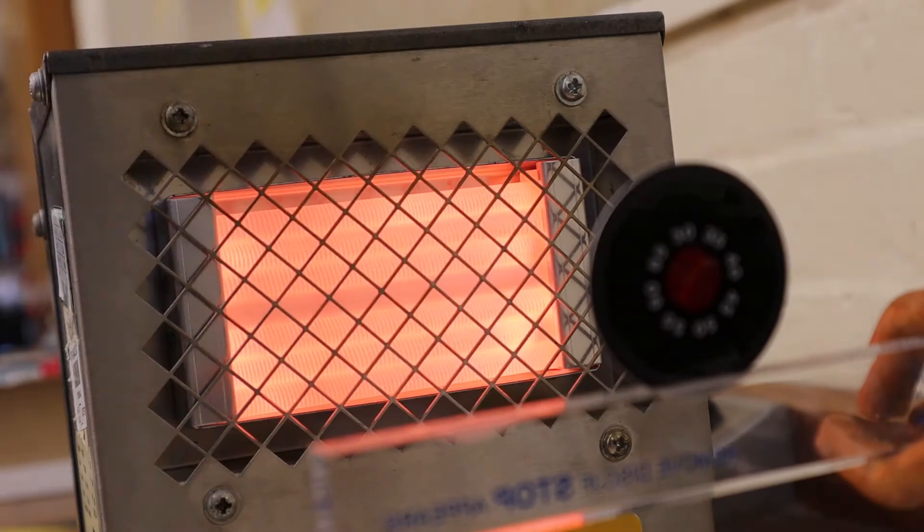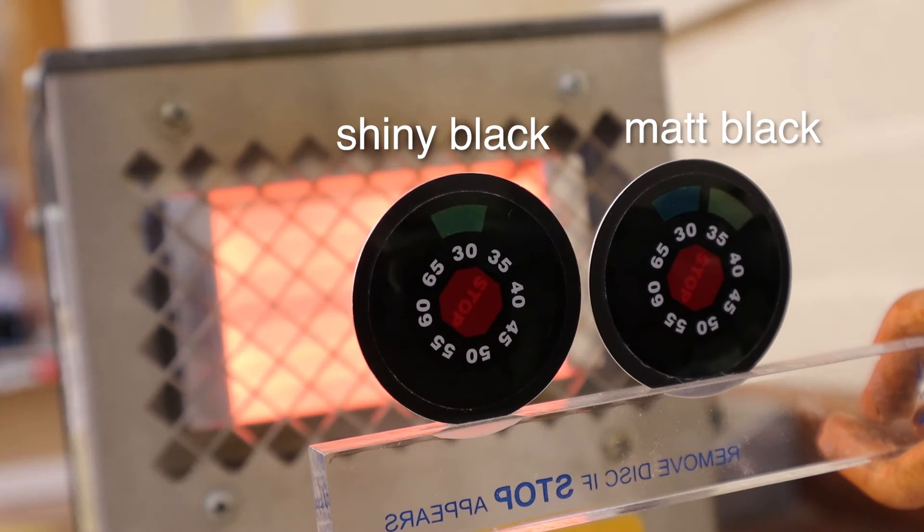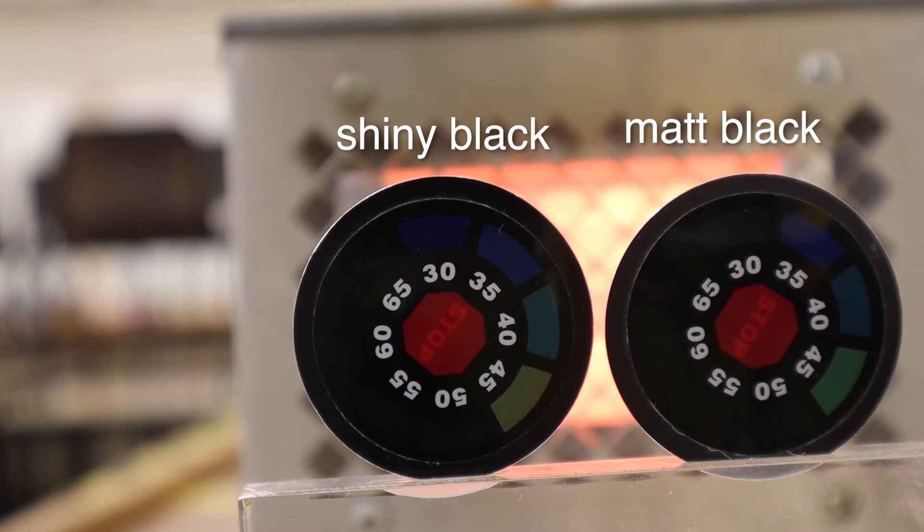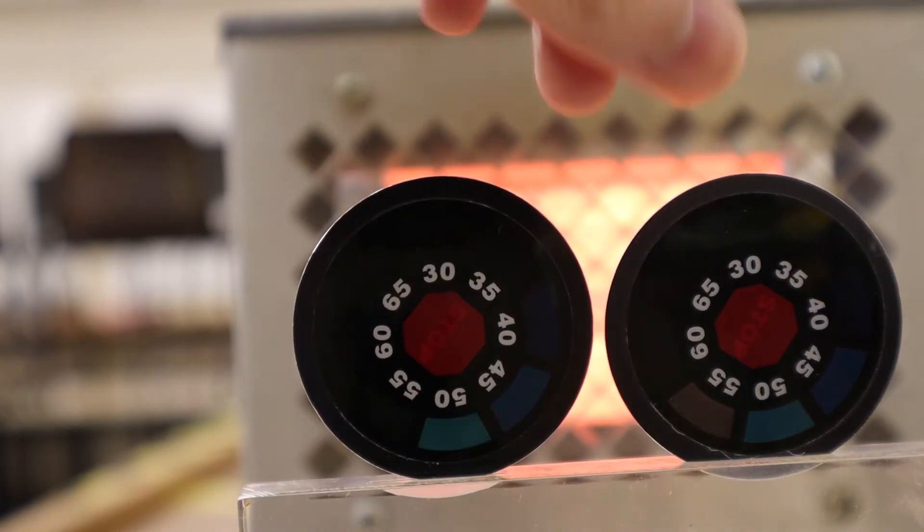Which do you think is a better absorber of infrared radiation? Shiny black or matte black? Testing the matte black against the shiny black, we again confirmed that a matte finish makes it a better absorber.